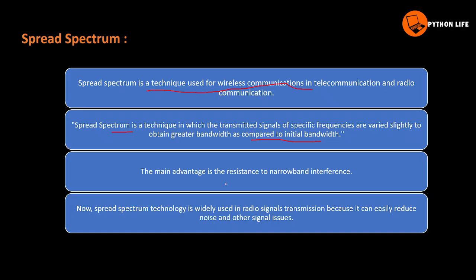The main advantage of spread spectrum is resistance to narrow band interference. This technology is widely used in radio signal transmission because it can easily reduce noise and other signal issues. The main difference is that it does not affect broadband interfaces.